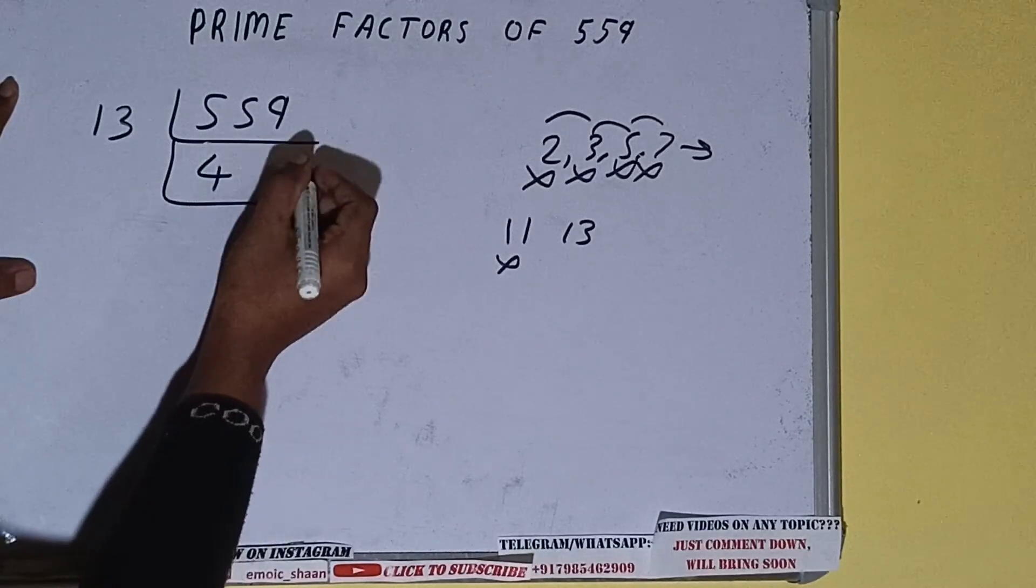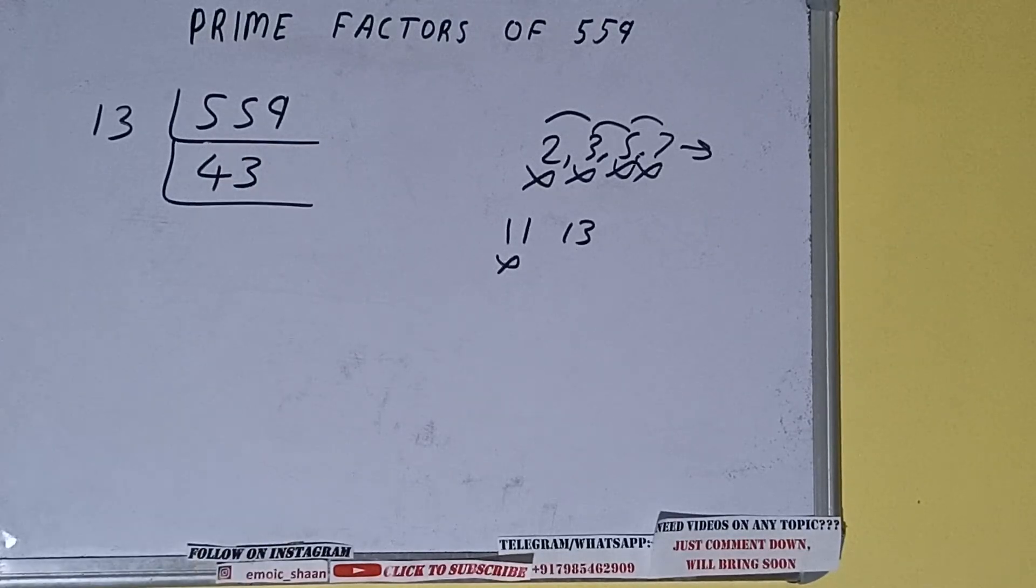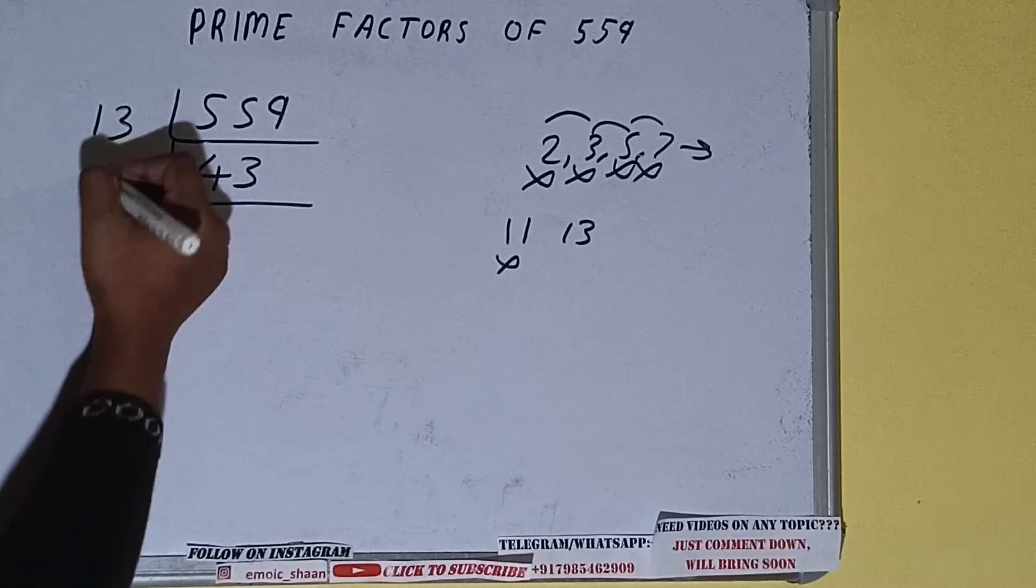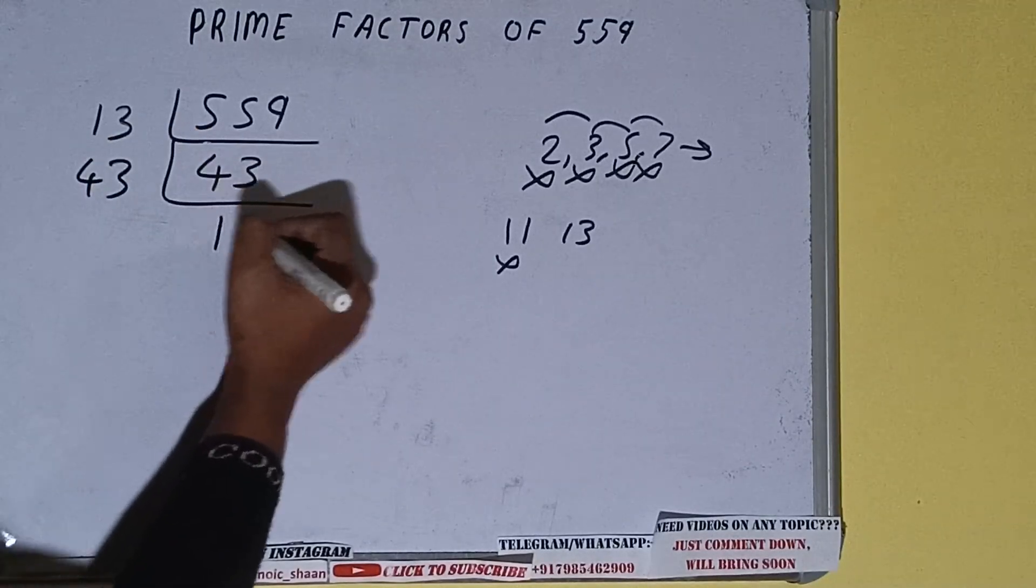13 times 4 is 52, 3, 9... 3 times 13 is 39. We'll be having 43, and 43 is further not divisible by 13. And 43 is also a prime number, so it is only divisible by itself, that is 43. And once we do so, we'll be getting one.